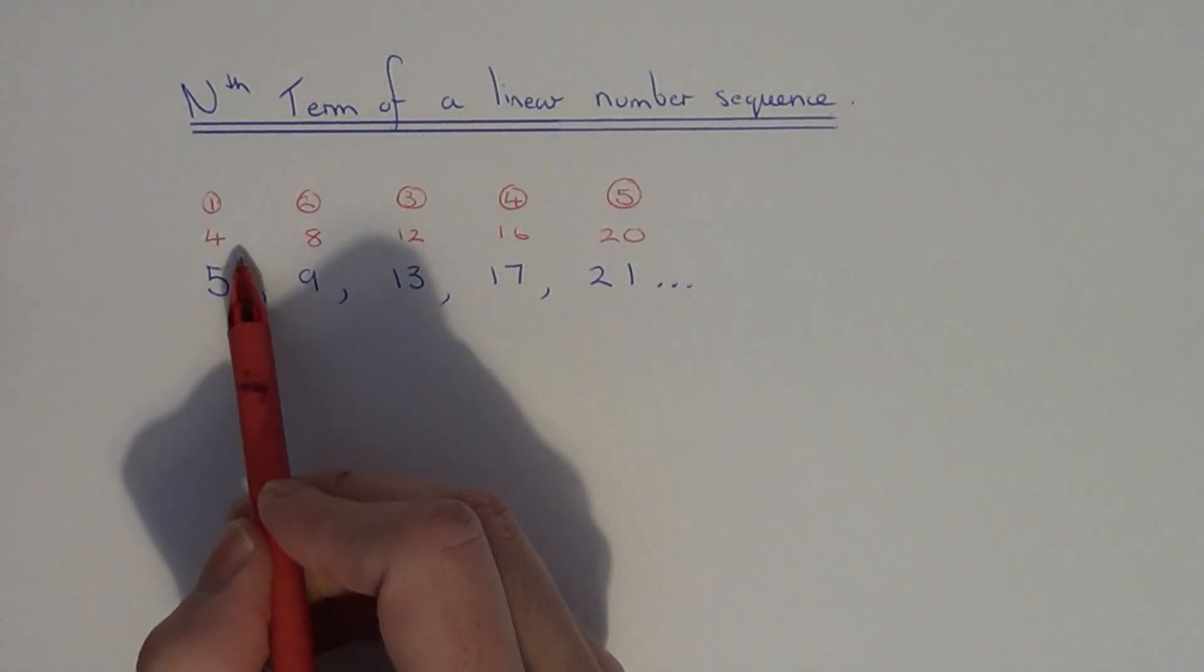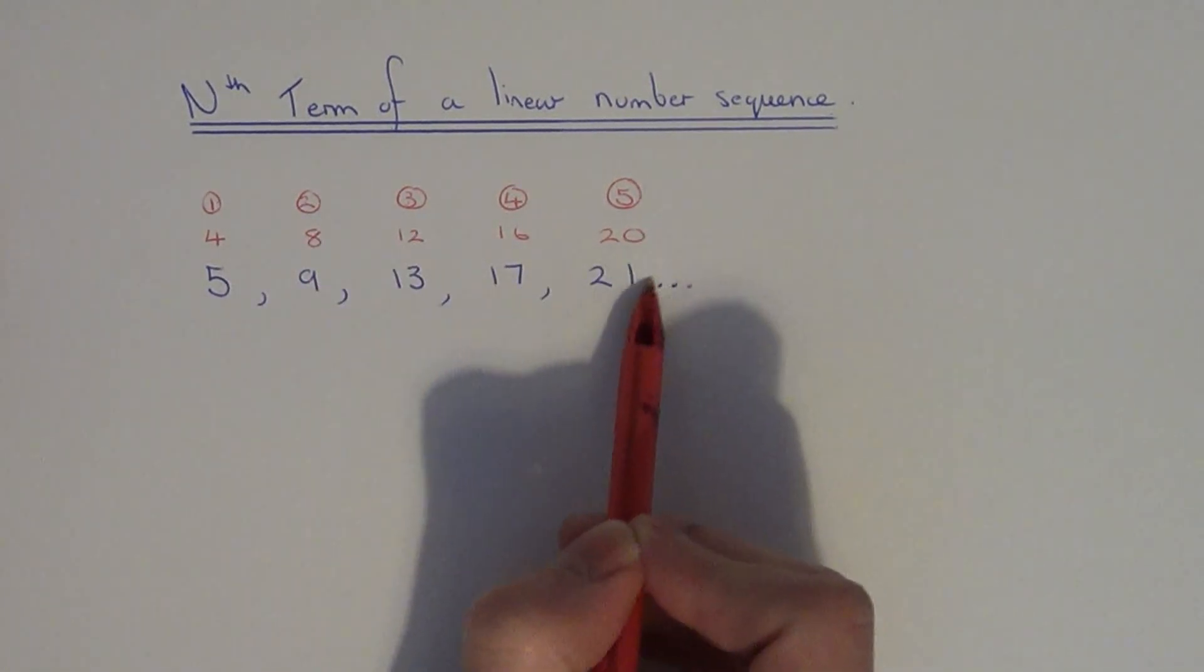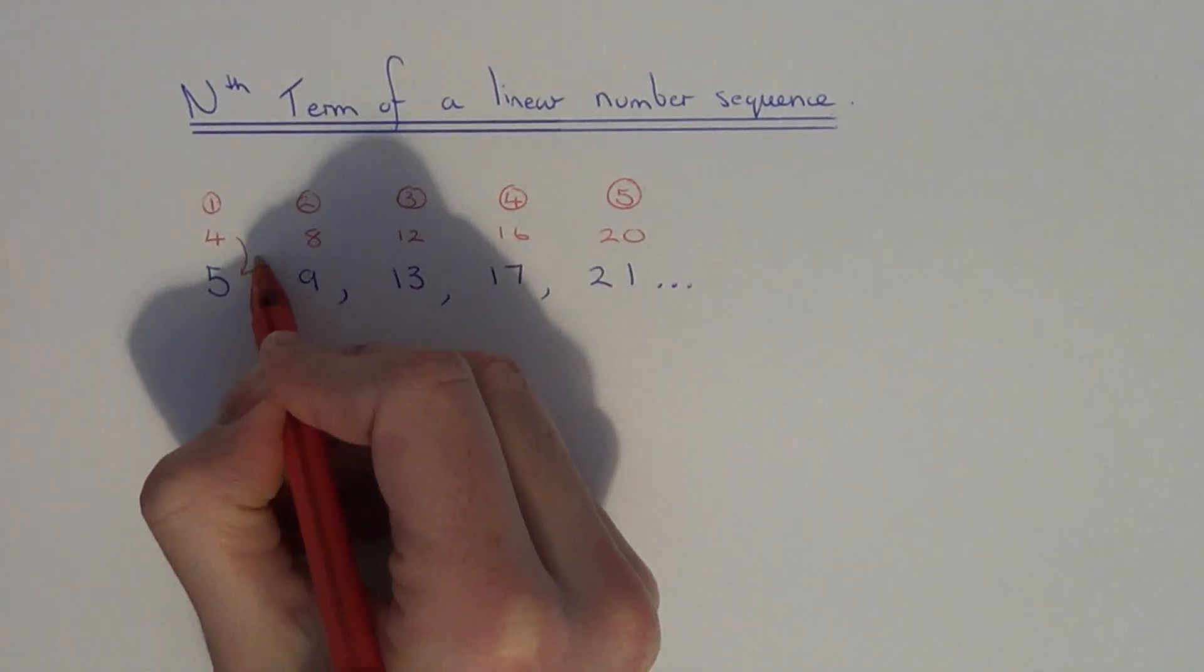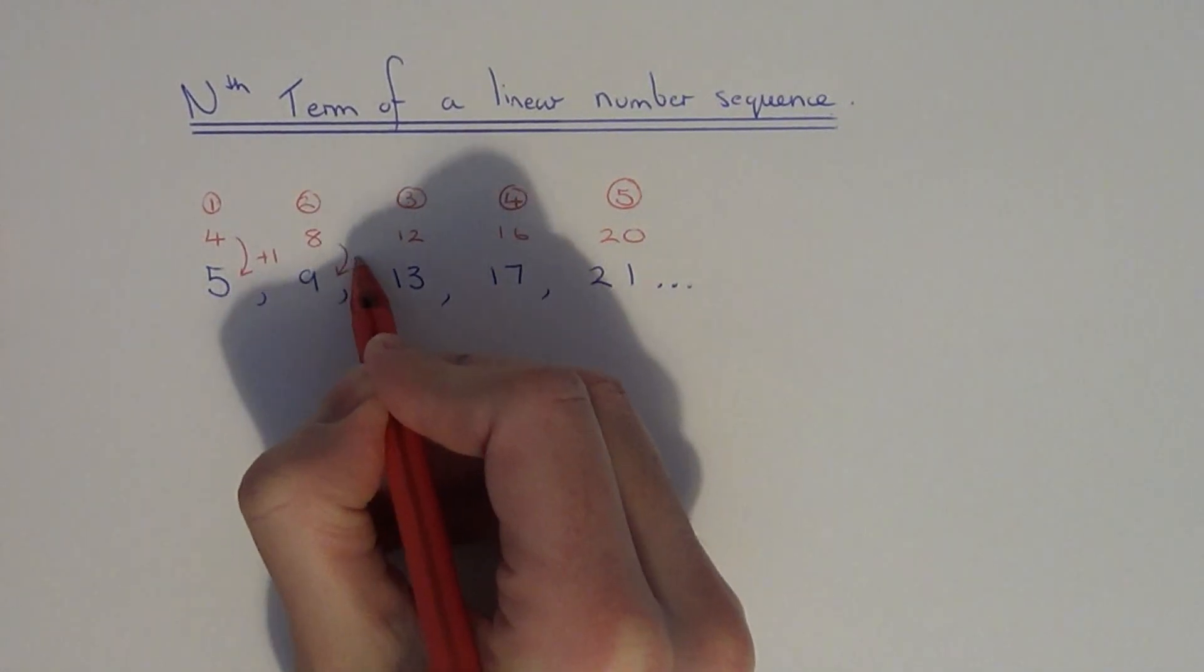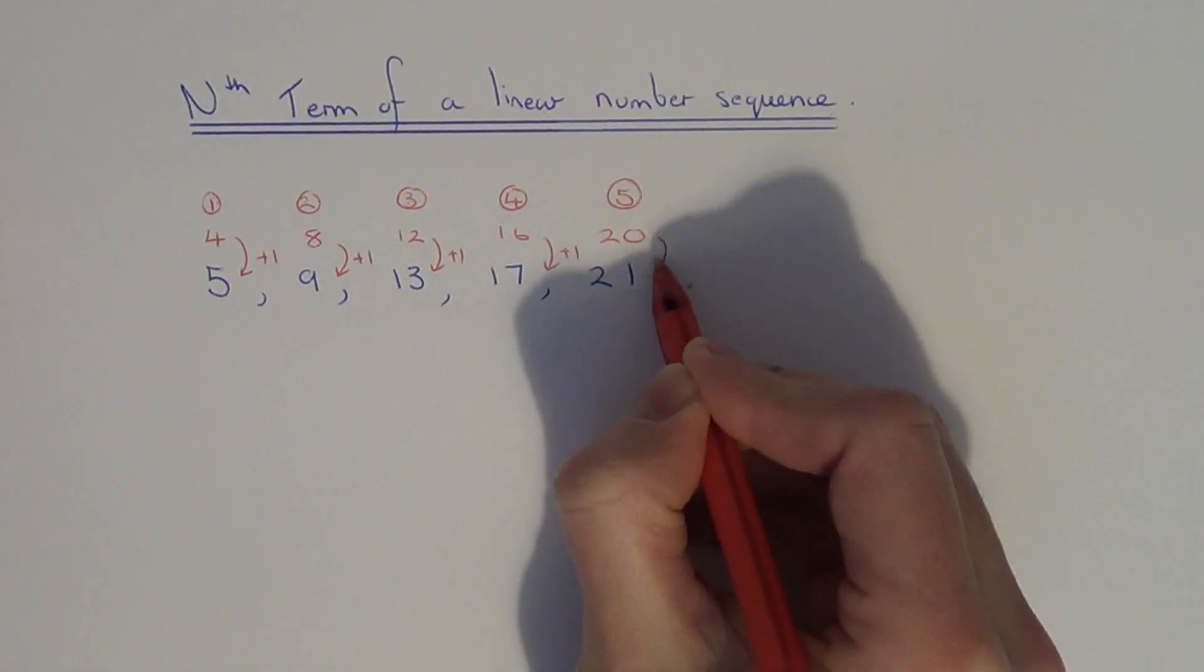Now you should be able to see how do we get from these 4 times tables to the numbers in the sequence. As you can see, if you add on 1 to each of your 4 times tables, it will give you the number in the sequence.